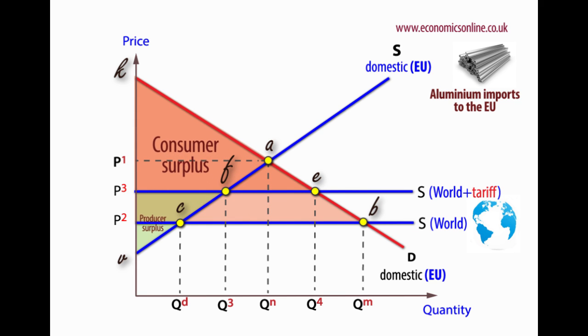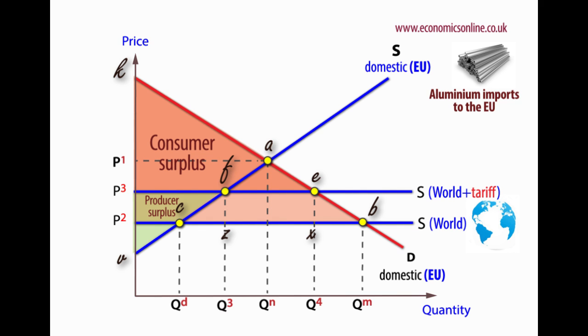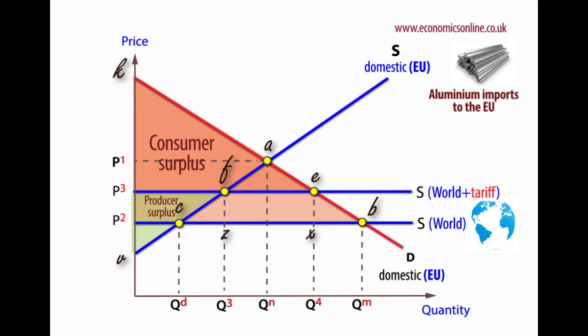Demand now contracts from B to E. Domestic supply now extends from C to F. While consumer surplus falls, producers surplus increases.